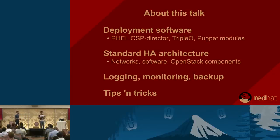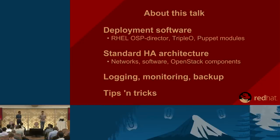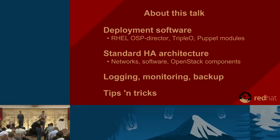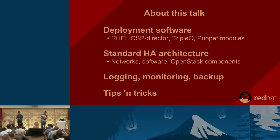We will talk about our standard architecture to achieve HA, the software we use, how we configure networks, and what's possible with OSP Director. We'll also cover how we configure OpenStack components. Then we'll discuss three very important goals for every OpenStack operational guide: logging, monitoring, and backup — and we'll share some tools we wrote that are available on GitHub. The last half of the talk is about sharing our experience as OpenStack operators over the last several years.